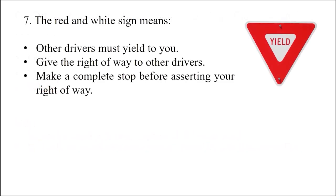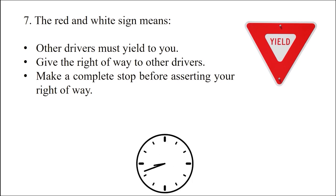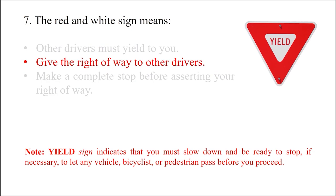Question: The red and white yield sign means — Option 1: Other drivers must yield to you. Option 2: Give the right of way to other drivers. Option 3: Make a complete stop before asserting your right of way. The answer is option 2: give the right of way to other drivers. The yield sign indicates you must slow down and be ready to stop if necessary to let any vehicle, bicyclist, or pedestrian pass before you proceed.